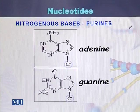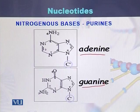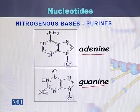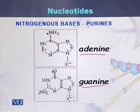Purines are adenine and guanine. Both adenine and guanine are two-ring structures. We can see in the diagrams that adenine is a two-ring structure, and guanine is also a two-ring structure.